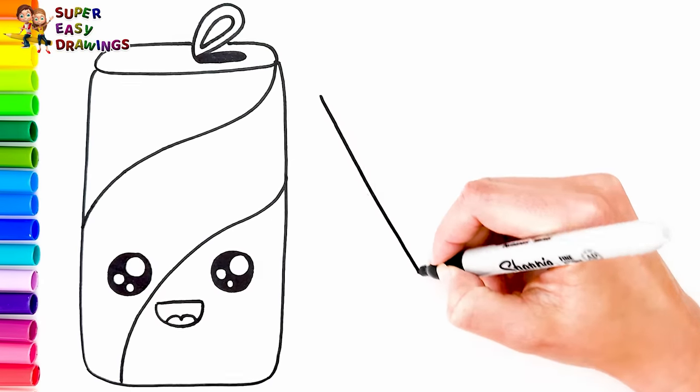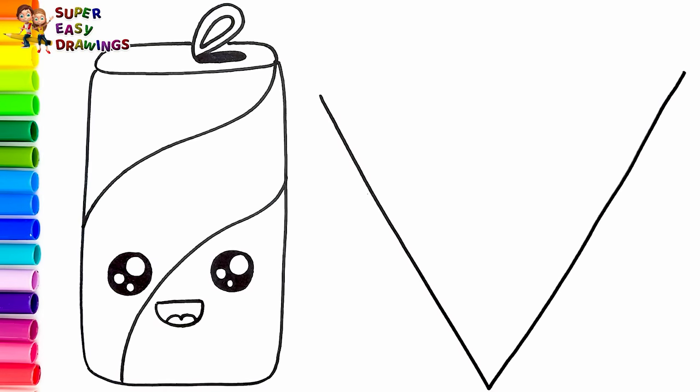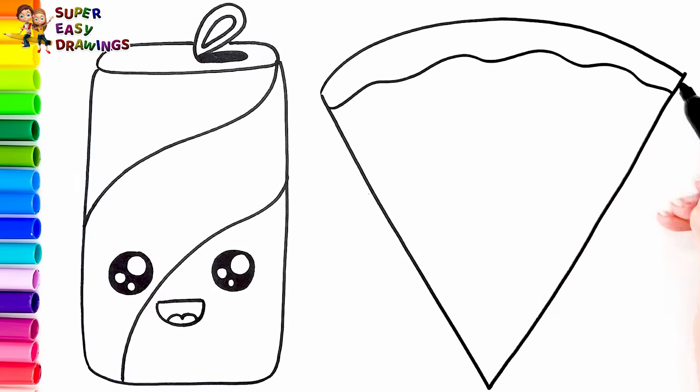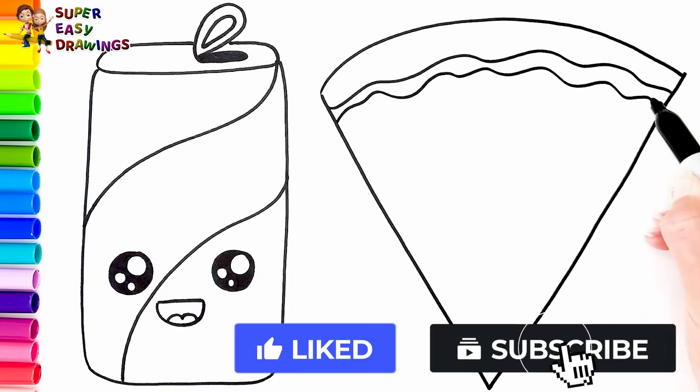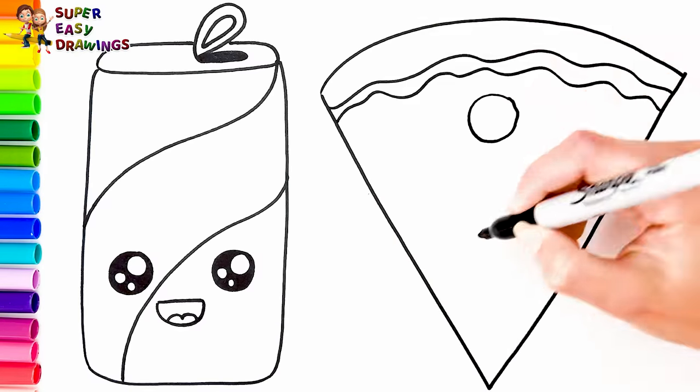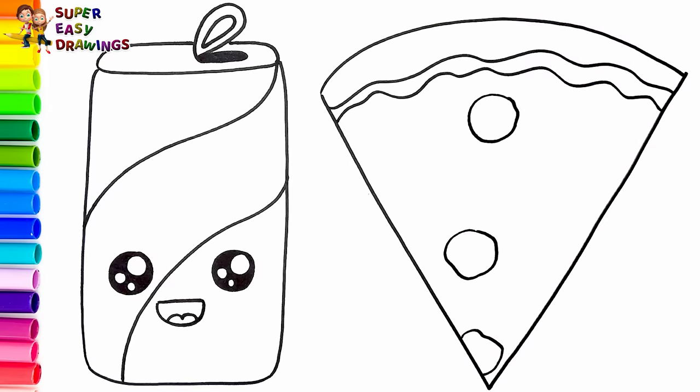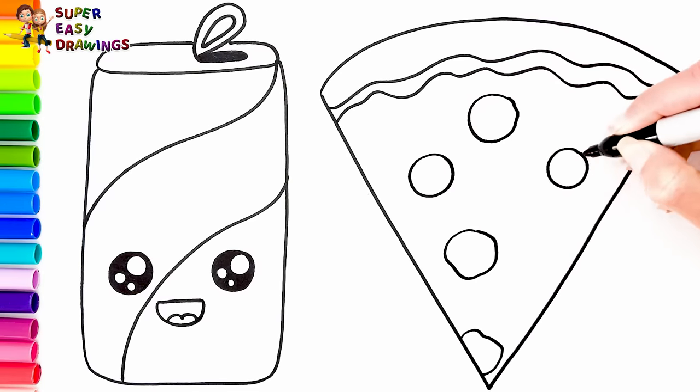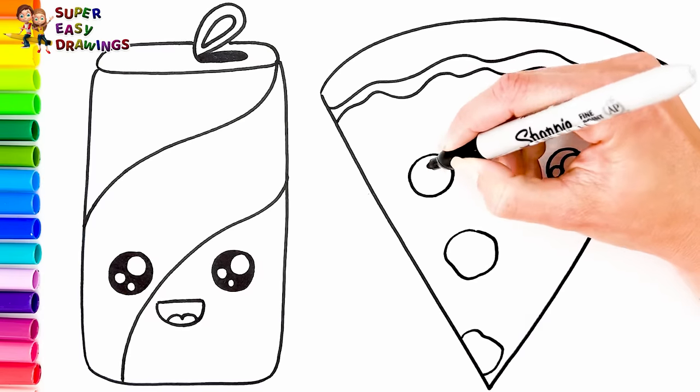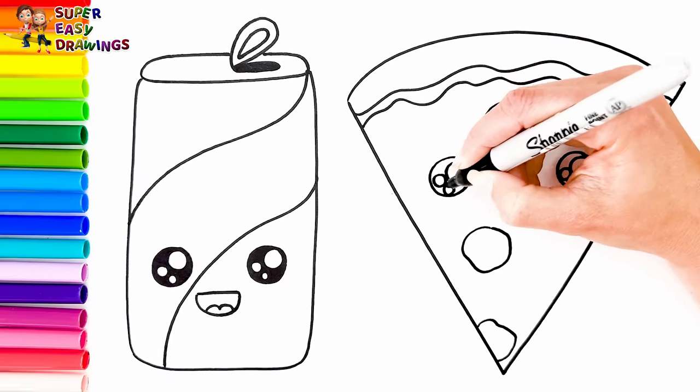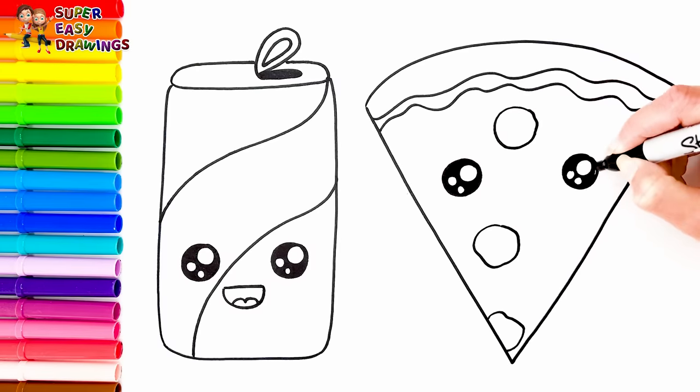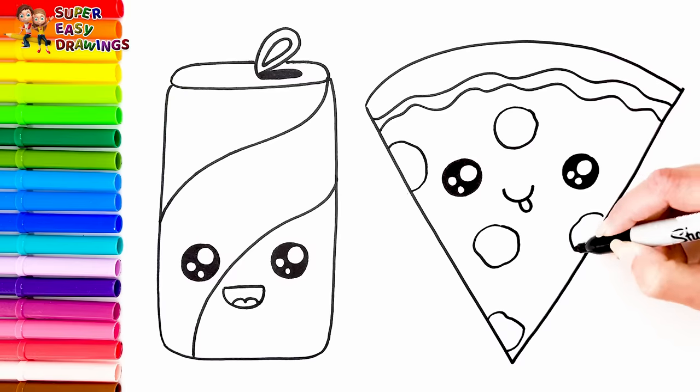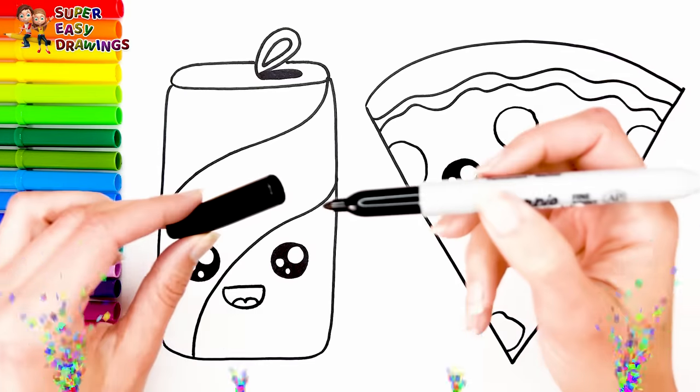Now let's draw a slice of pizza. I draw a triangular shape like this. Then I draw two wavy lines on the border for the sauce and the cheese. Finally, I draw some salamis on it. And a cute face for our pizza. I draw two cute eyes and the smiling mouth. Good job!